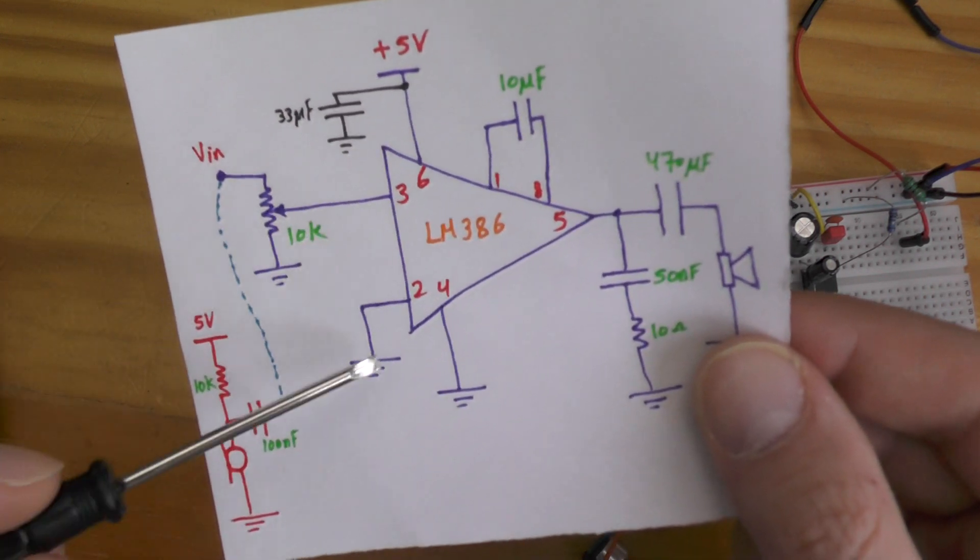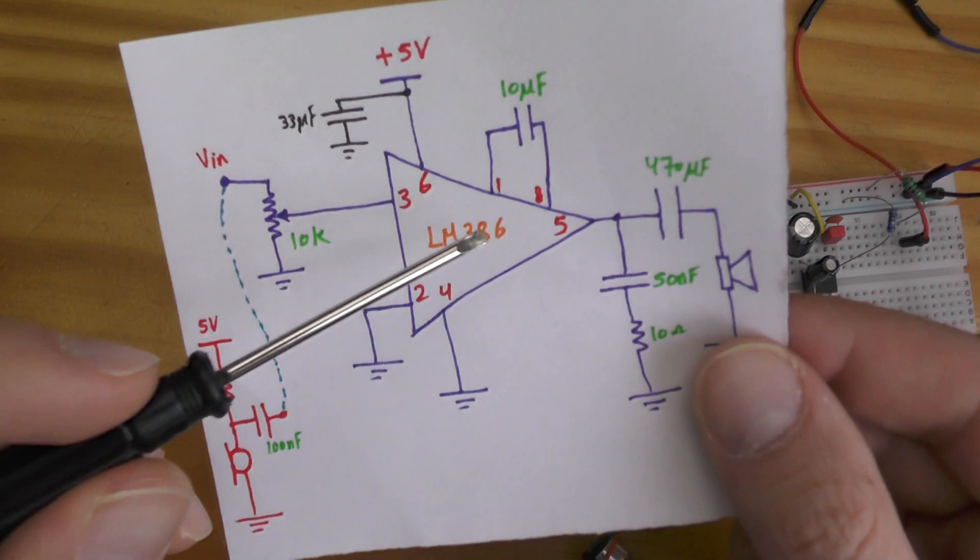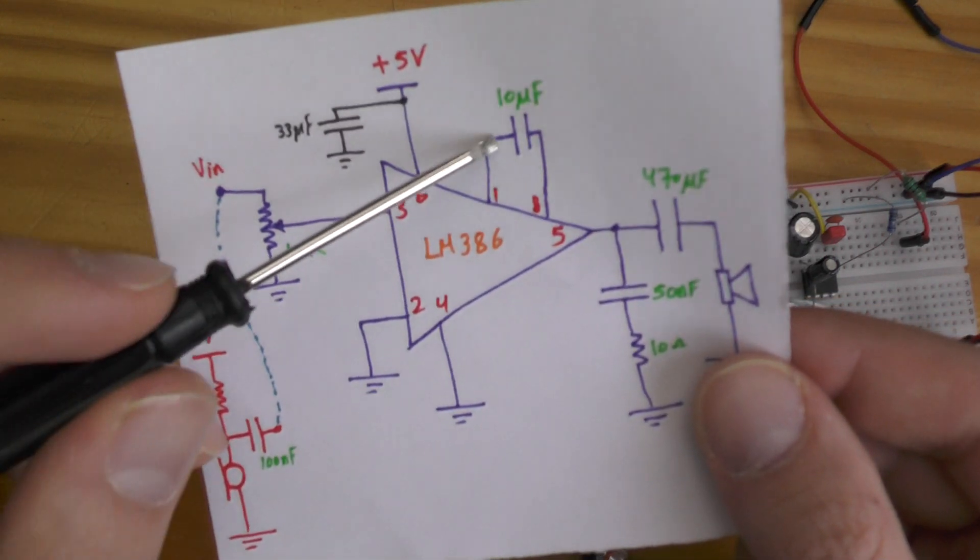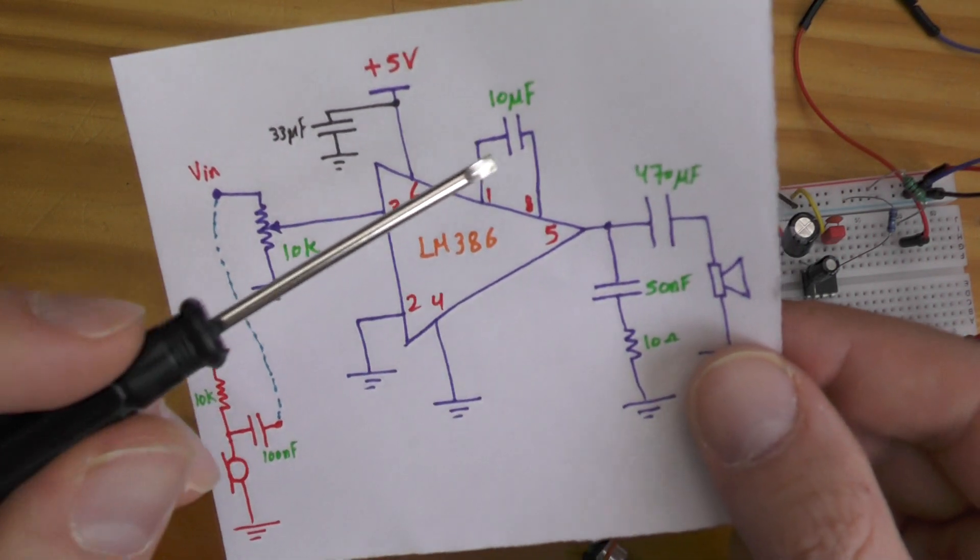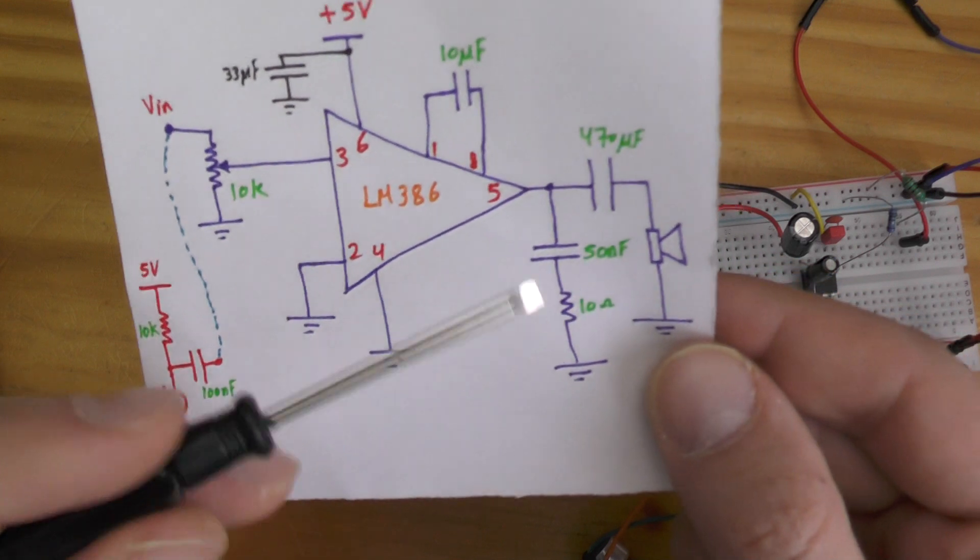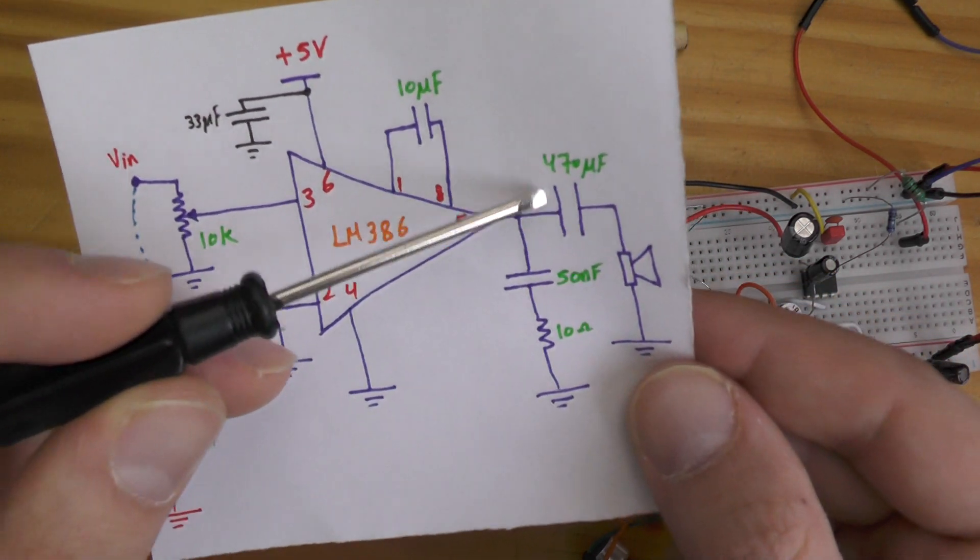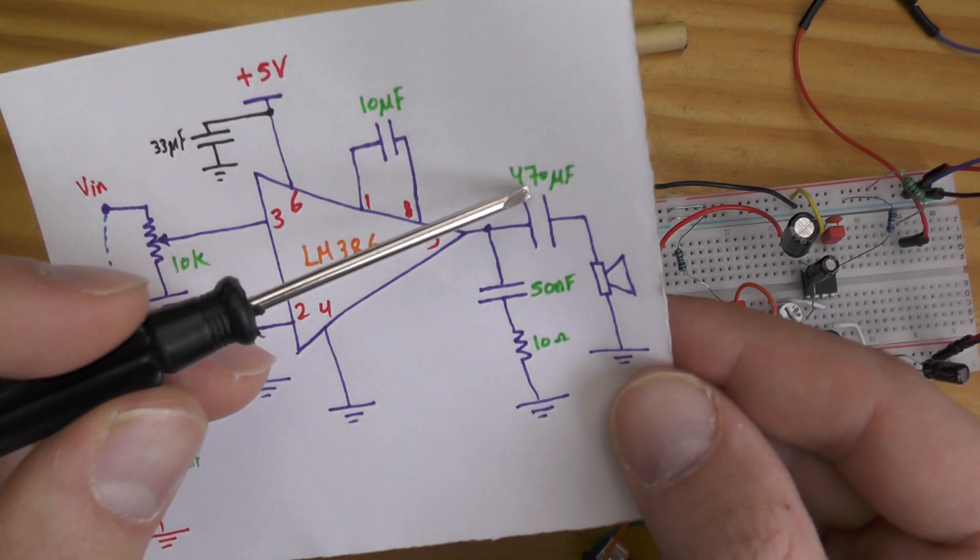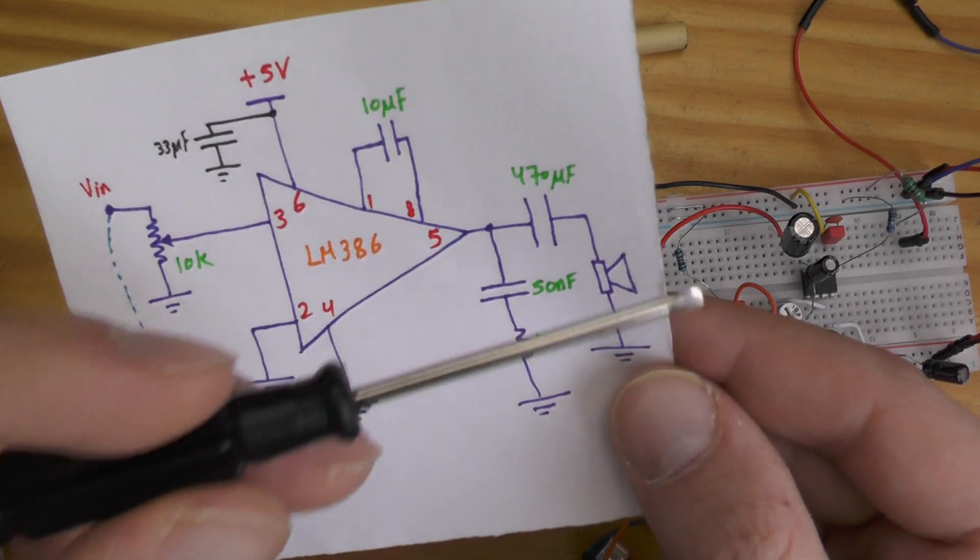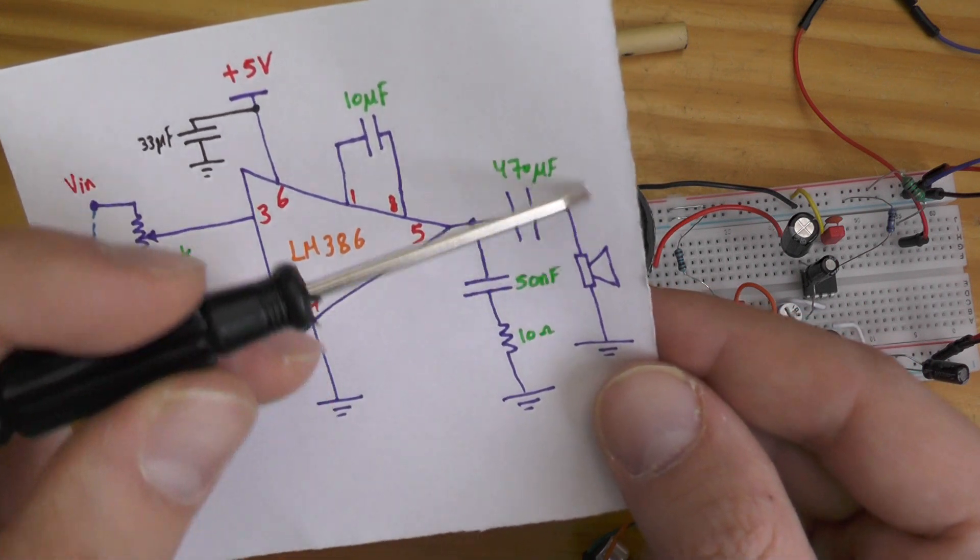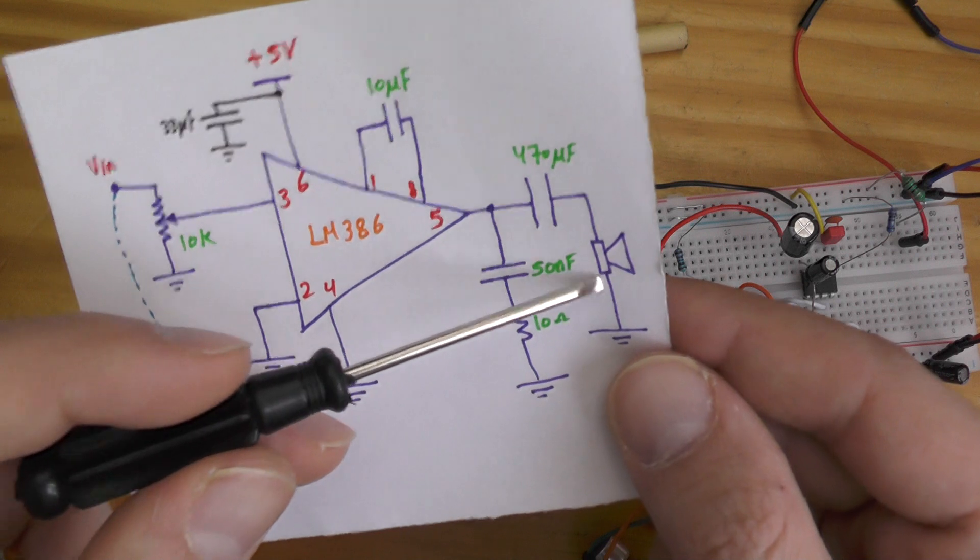Number 1 and 8, you need this capacitor if you need more gain. So without this capacitor you will get by default a gain of 20. By installing this capacitor you have 200 gain, so you have 200 amplification. Number 5 is the output and straightforward just connect it to a big capacitor like 470 microfarad or 1000 if you have.